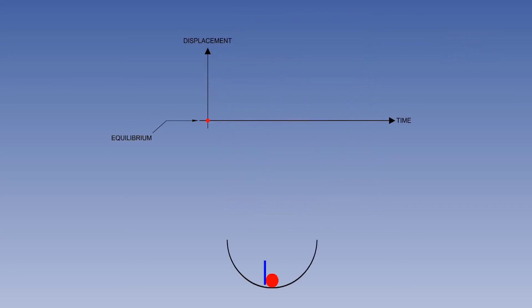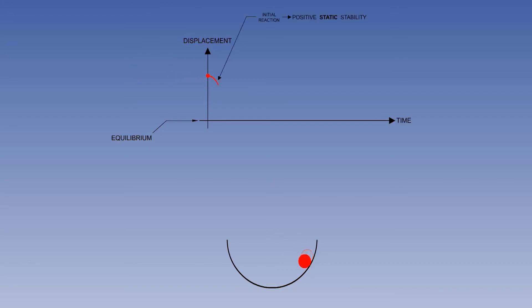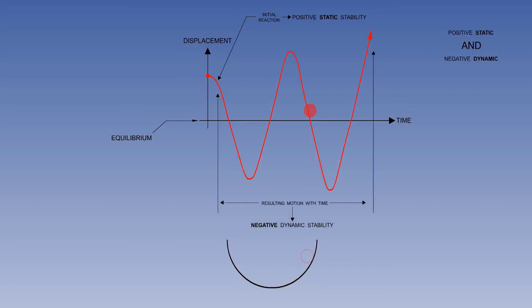Let's reset the graph and include the ball in the bowl. Displacement takes place, the disturbing force is removed, and the initial movement back towards equilibrium begins. But over a period of time, there is increasing oscillation through equilibrium. The only way this can occur is for energy to be added. The energy usually comes from the pilot trying to damp out the motion, but out of phase with it, making it worse instead of better. This is called pilot-induced oscillation.